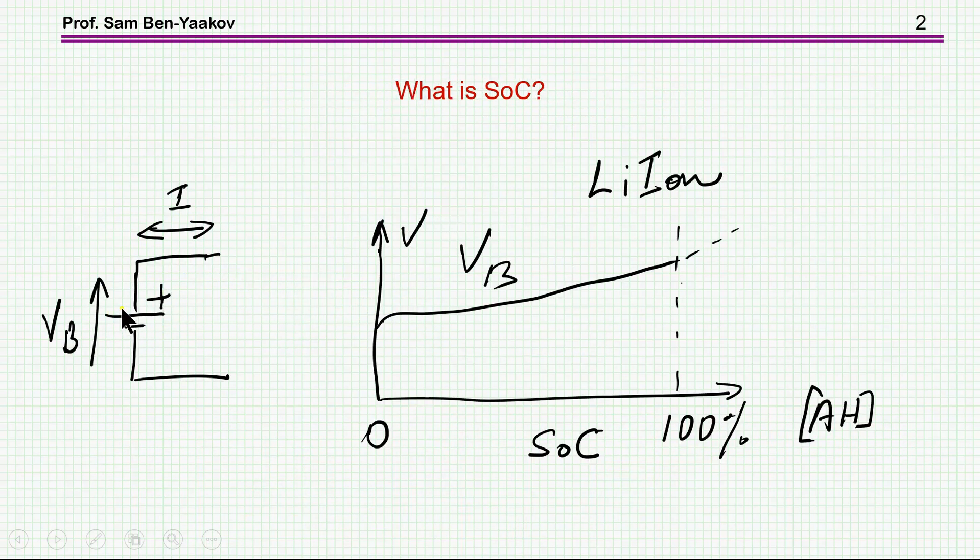So what is state of charge? Well, if we have a battery and then we either use it or charge it, there's a current flowing back and forth. And obviously we would like to know how much energy is still in the battery. And we define or refer to the energy in terms of amp hours or milliamp hours. This is the state of charge. So we start with an empty or discharged battery, charge it, the voltage goes up to a certain maximum value. And this will be the 100% state of charge of the battery, depending on the battery. Now, the span here is about one volt.